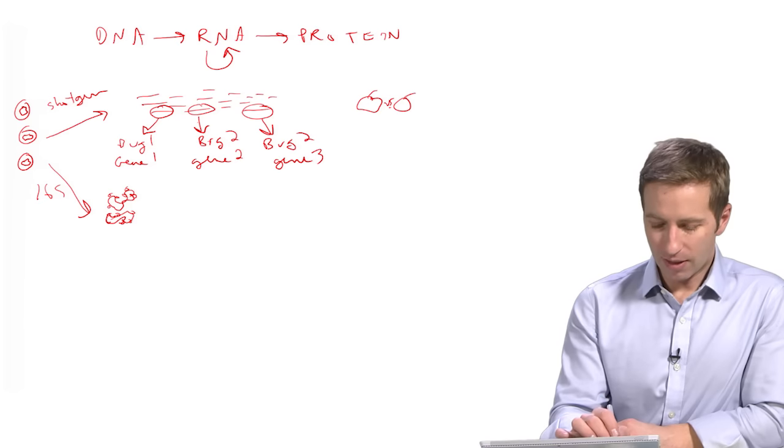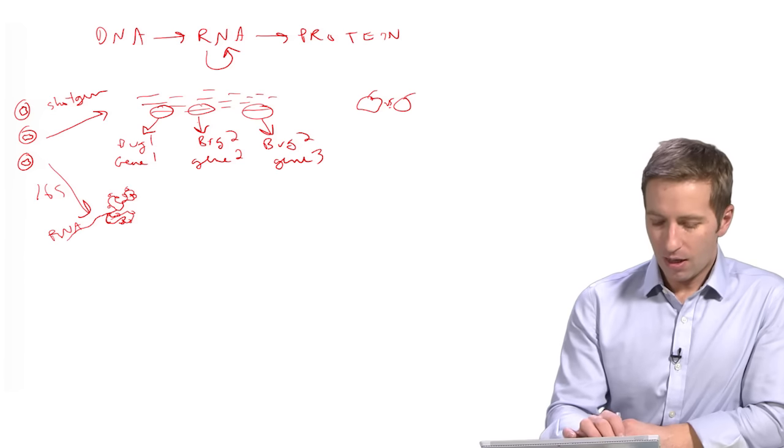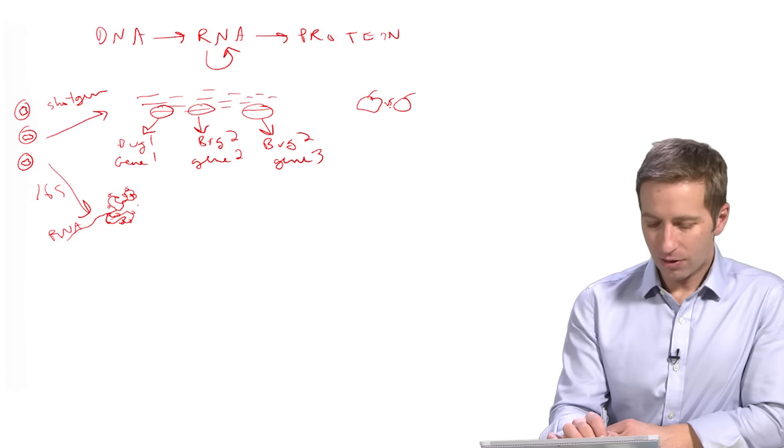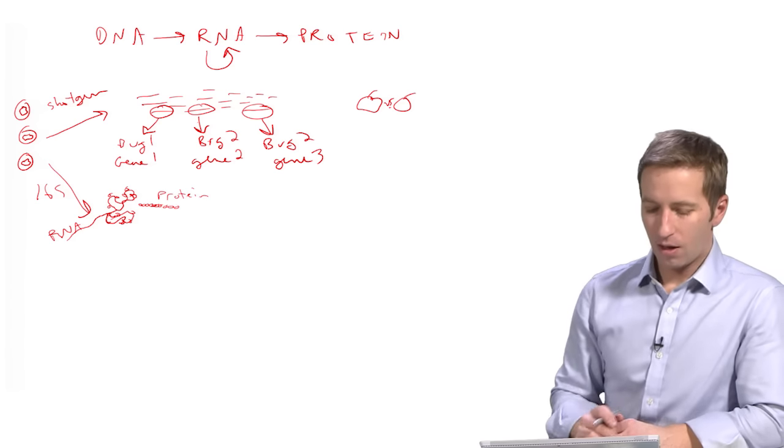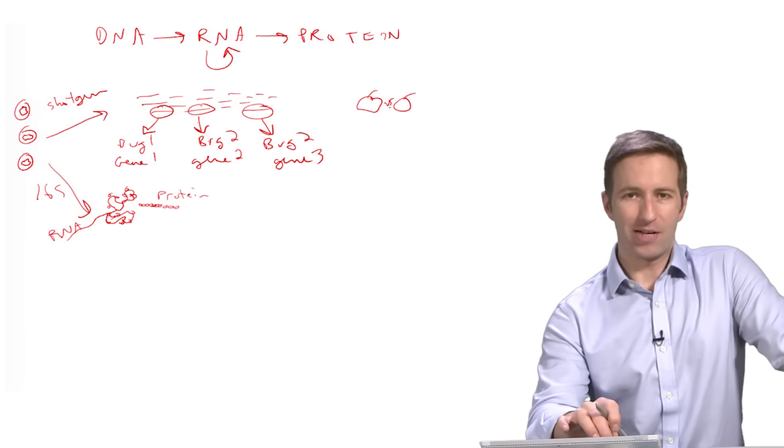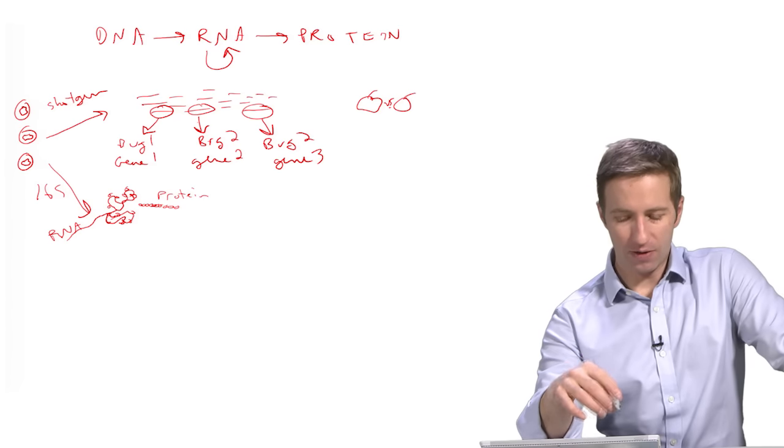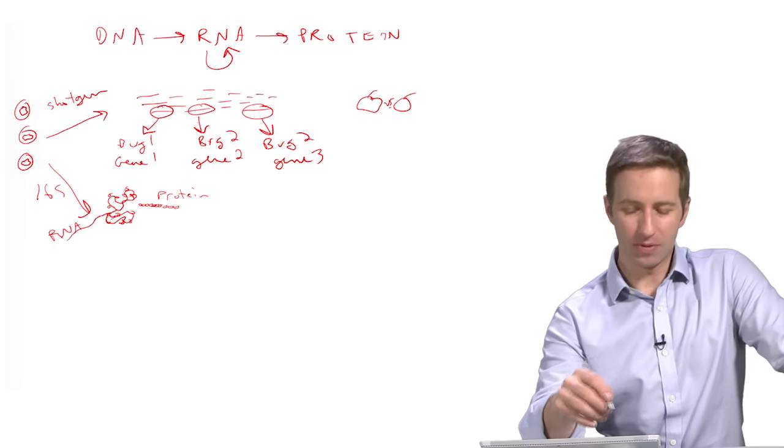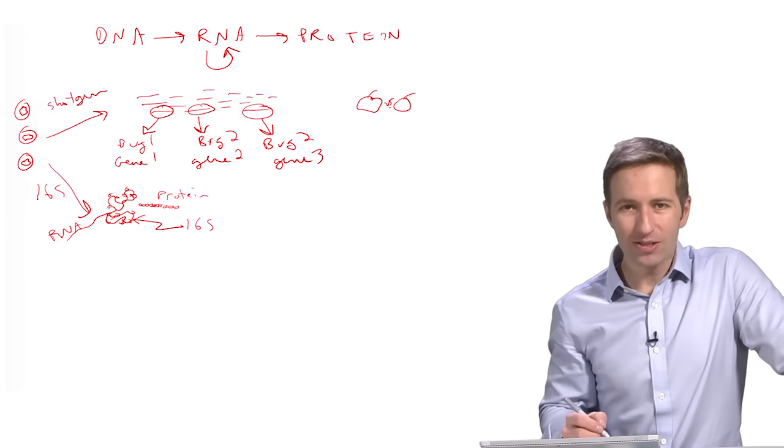And then what the ribosome does is it takes pieces of RNA that were transcribed off of the genome, it chews them up, and out the other side it spits out amino acids making protein. Any one of the genes that make up the ribosome might be a good marker gene because all bugs have it, or in fact all organisms have ribosomes. The one that people have focused on is this particular one called the 16S gene.